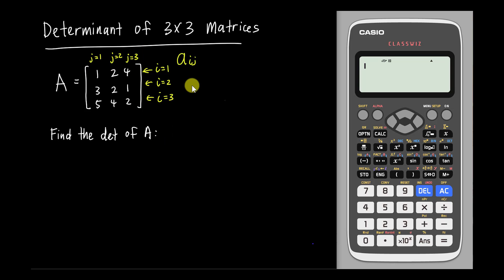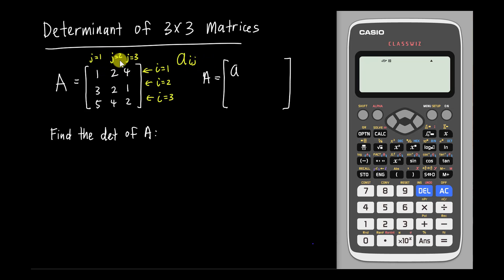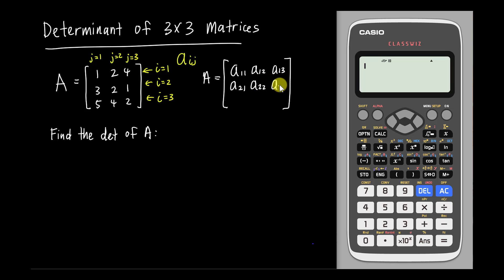By understanding the position names, I can label each element. Writing row index first, then column: the first element is A₁₁, next is A₁₂, then A₁₃. The second row gives A₂₁, A₂₂, A₂₃. The third row gives A₃₁, A₃₂, and A₃₃.